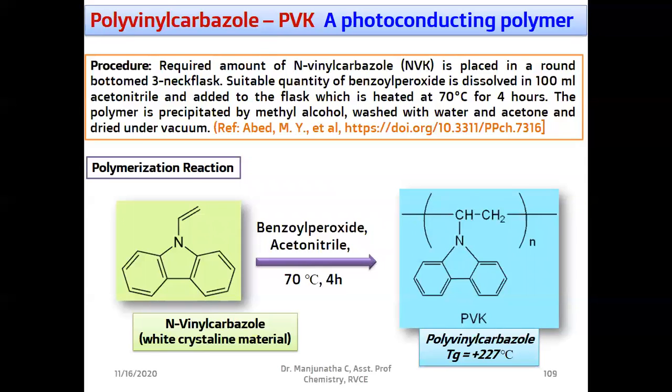Let us look at this concept by taking Polyvinyl Carbazole, also called PVK as an example. Let us understand its preparation and the reactions involved. For the preparation of Polyvinyl Carbazole, we are going to use Vinyl Carbazole, a white crystalline material as a reactant. This is actually Carbazole group and this is a Vinyl group, also called N-Vinyl Carbazole because Vinyl is attached to Nitrogen. We take a required amount of N-Vinyl Carbazole (NVK) in a three necked round bottom flask. Then suitable quantity of Benzoyl Peroxide dissolved in Acetonitrile should be added to the round bottom flask containing this NVK. And that reaction mixture is heated at 70 degree centigrade for about four hours.